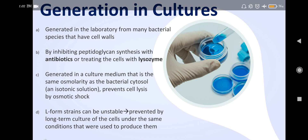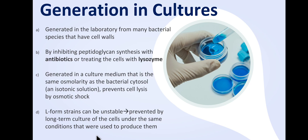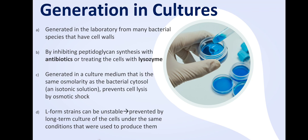To generate L-forms in the laboratory, bacterial species with cell walls are treated by inhibiting peptidoglycan synthesis with antibiotics or by treating cells with lysozyme. They must be cultured in a medium of the same osmolarity as the bacterial cytosol — an isotonic solution that prevents cell lysis by osmotic shock. L-form strains obtained this way can be unstable, but stability can be maintained by long-term culture under the same conditions used to produce them.